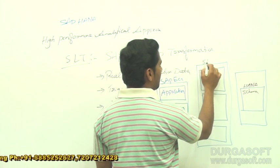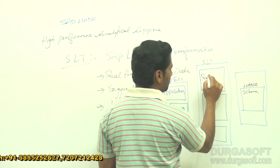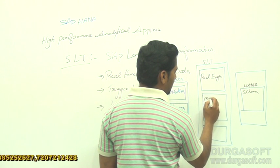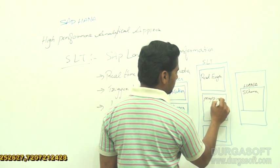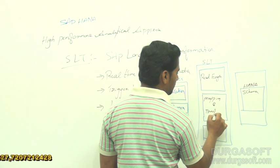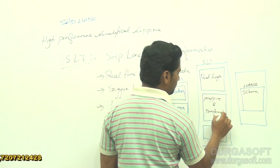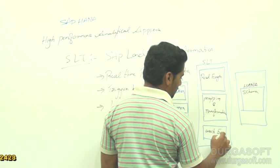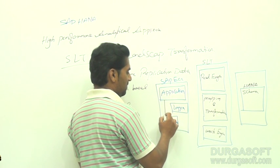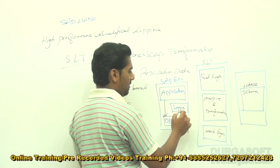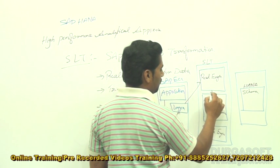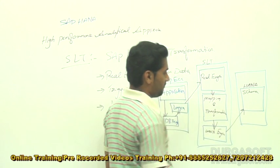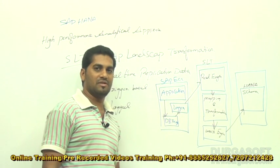The trigger table captures records from SAP ECC and stores them in a schema. The read engine reads from the logger file, performs mapping and transformation, then the write engine sends the data to the HANA system. This is how the SLT process takes place.